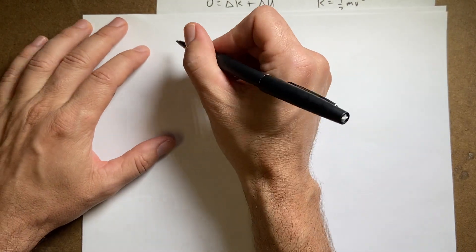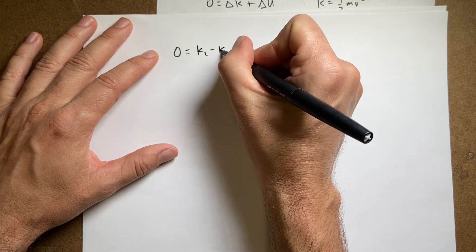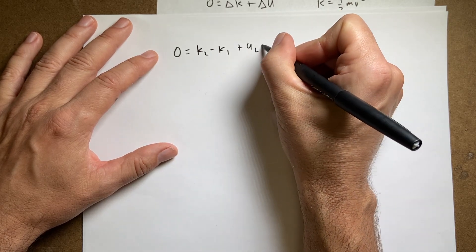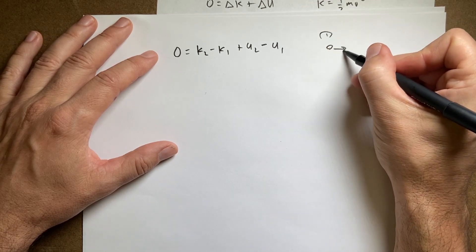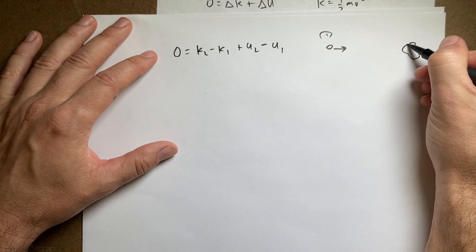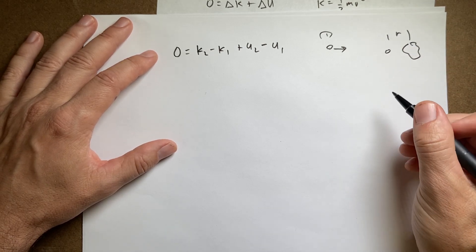Okay, so I'm going to have zero equals k2 minus k1 plus u2 minus u1. And so just as a reminder, here's the position at 1 where it's moving and then here's position 2, a distance r away and it's not moving.